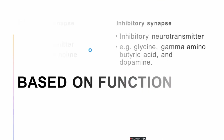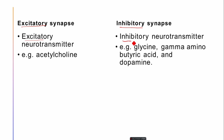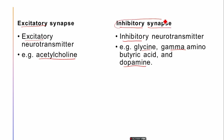Based on function, most importantly we have excitatory and inhibitory synapses. Some neurotransmitters work to excite neurons, while others work to inhibit the activity of another neuron. Acetylcholine is an excitatory neurotransmitter, while glycine, gamma-aminobutyric acid (commonly known as GABA), and dopamine are inhibitory neurotransmitters. When they are created at the synapse, that is known as an inhibitory synapse.